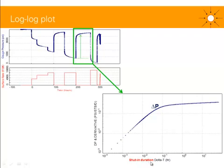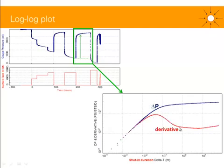I plot this versus the shut-in duration delta T. So I plot pressure T minus pressure shut-in versus the elapsed time of the shut-in duration, and this is a log-log scale that's going to be easier to identify the different flow behaviors and flow regimes. You can take as well the derivative of this delta P, and this is the plot in red — the derivative of delta P or the PBU pressure with respect to the time function.